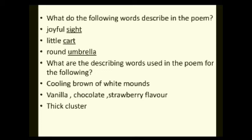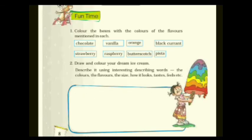Go through the poem and see what each word is compared to. The word 'mound' is described as 'cooling brown of white.' Next, vanilla, chocolate, and strawberry are the flavors mentioned in the poem — write them down. For 'cluster,' it means a thick group, like lots of children standing together — that is called a cluster of children.